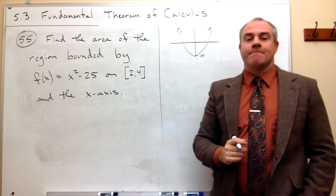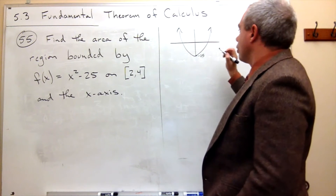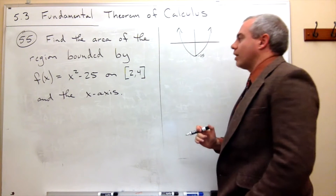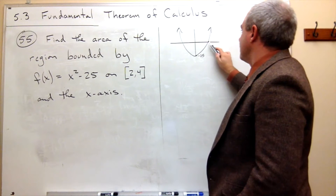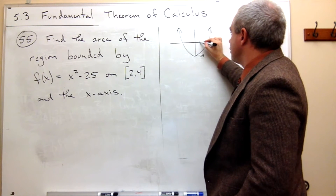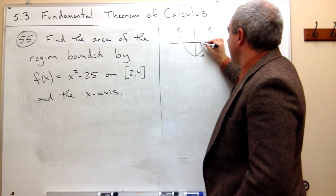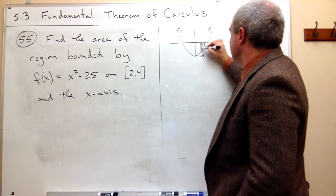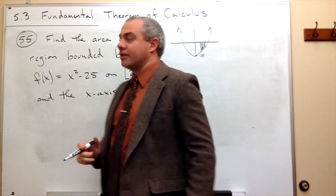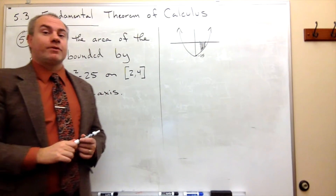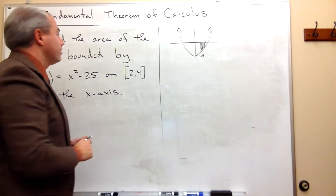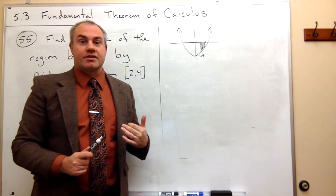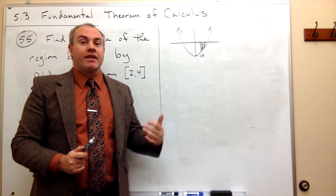So what we're really trying to find here — we're just interested in between 2 and 4. By the way, where does this thing intersect 0? It would be at 5. So from 2 to 4, we have some area here and we want to know how much area is trapped right there. Now we have to be a little bit careful because we recognize that this area is sitting underneath the x-axis, not above the x-axis.